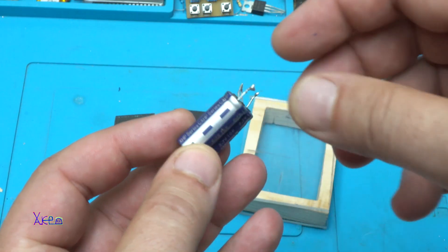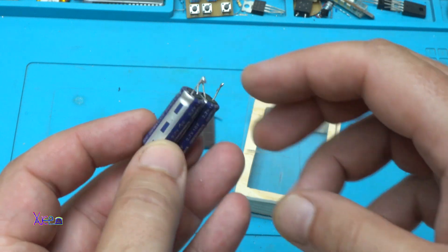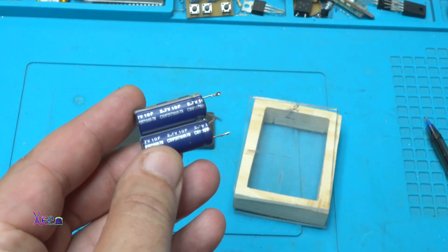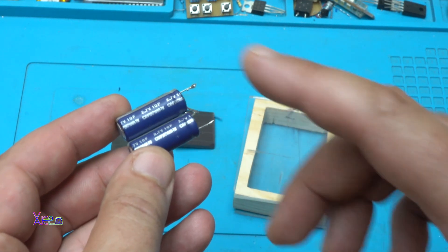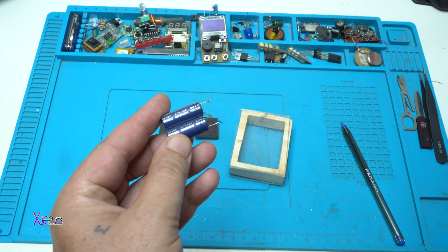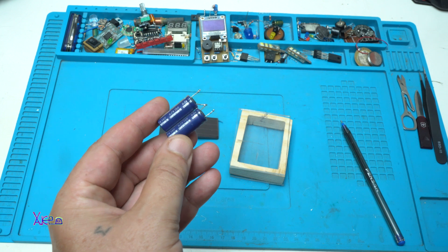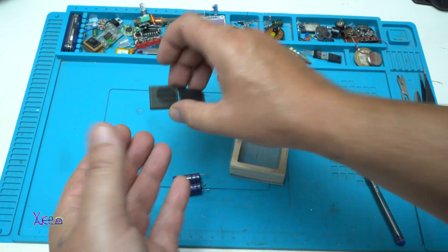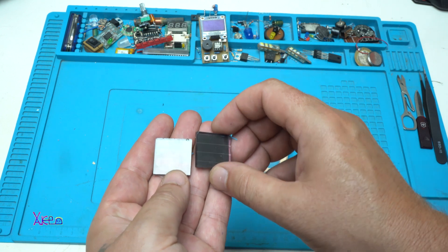Here it is the two super capacitors that I am going to use. They are 2.7 volts 10 farads. But I am going to connect them in parallel. So I will get 2.7 volts 20 farads of capacity. I am going to use these two small solar panels.